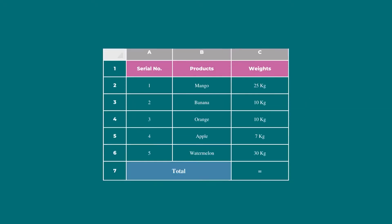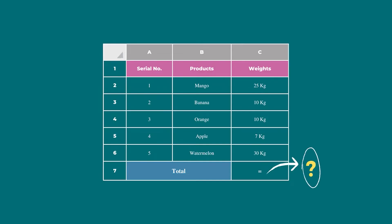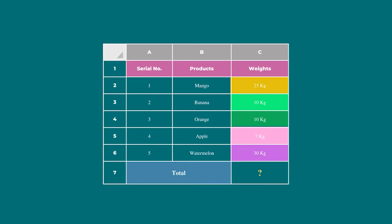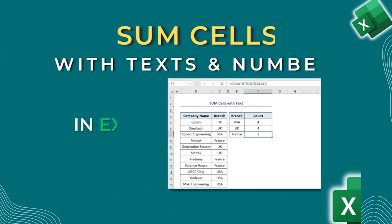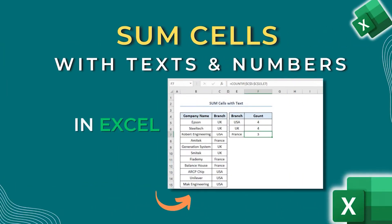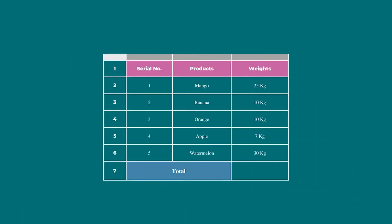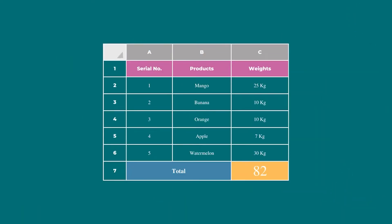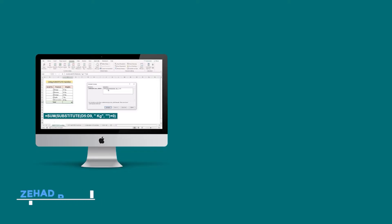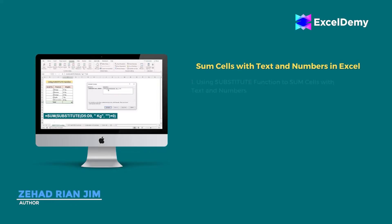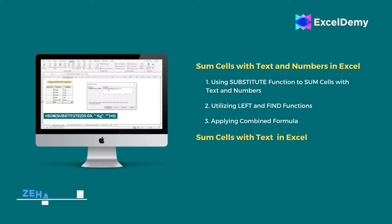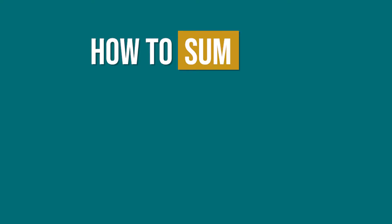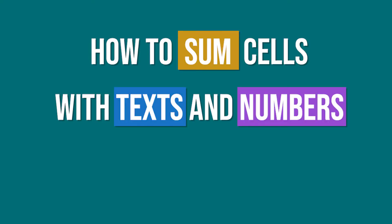Hello everyone. If you work in cells or have a spreadsheet that needs the number of units sold along with prices and descriptions, then you know how important it is to sum cells with text and numbers in Excel. You can easily do it in just a click. This is Jihadrian Jim from Excel Demi, and today we will learn several methods on how to sum cells with text and numbers in Excel.